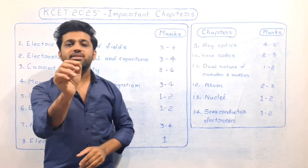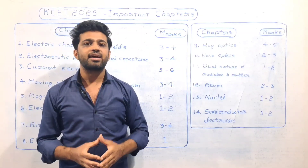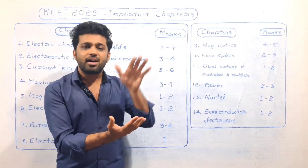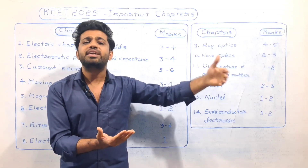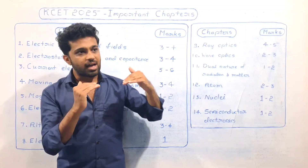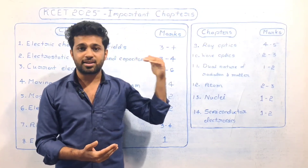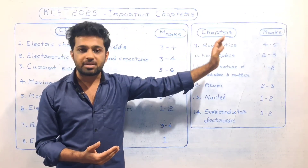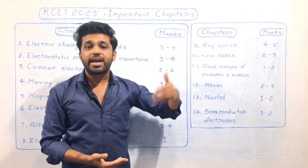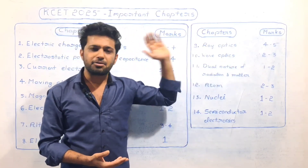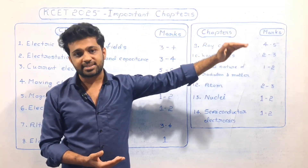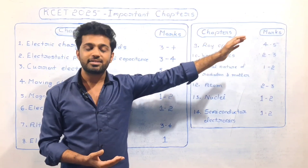What is the KCET exam? It is about 60 marks. In those 60 marks, there are about 40 to 45 questions. It is based on the second PUC syllabus. If you are studying in second PUC, you will continue to study for the exam. If you are preparing for the KCET exam, you will have a great chance of scoring marks.